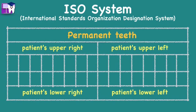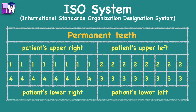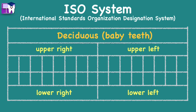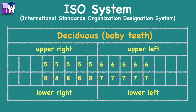The ISO system uses a two-digit numbering system where the first digit represents the quadrant of the tooth and the second digit represents the number of the tooth from the midline of the face. It also applies to the deciduous or baby teeth. The first digit is about the quadrant and the second digit is about the tooth.